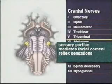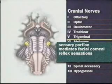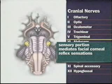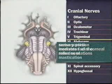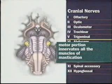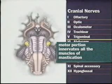The sensory portion of cranial nerve 5, the trigeminal nerve, mediates facial sensation and the sensory part of the corneal reflex. The motor portion of the nerve innervates all the muscles of mastication.